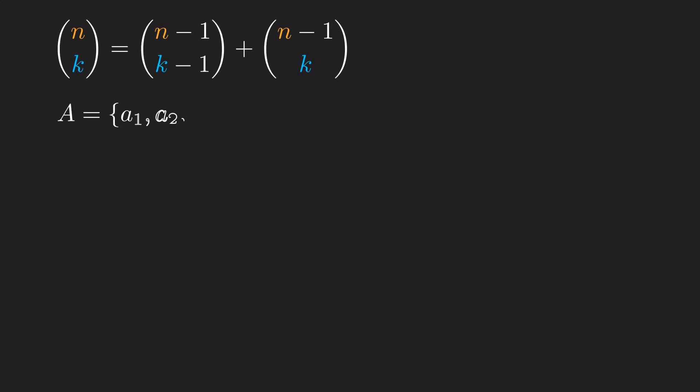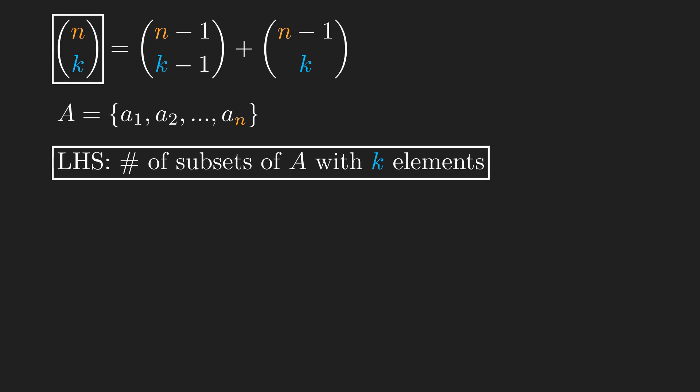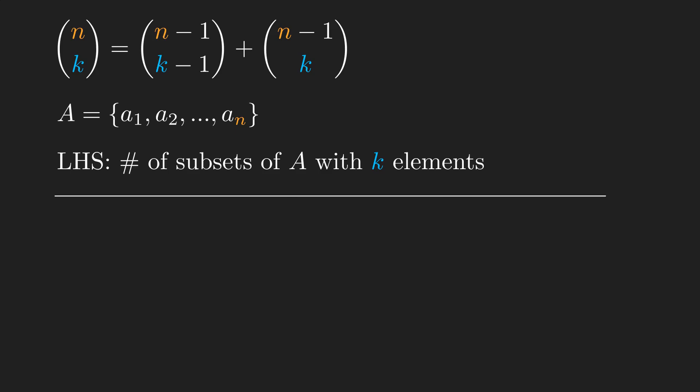To prove it, let's assume we have a set called A containing n distinct elements. The left hand side of the identity means how many ways there are to select k elements from n elements. No repetitions are allowed and the order of elements does not matter. In other words, it shows the number of subsets of A containing k elements. Now we need a new perspective for counting the same thing in a different way.